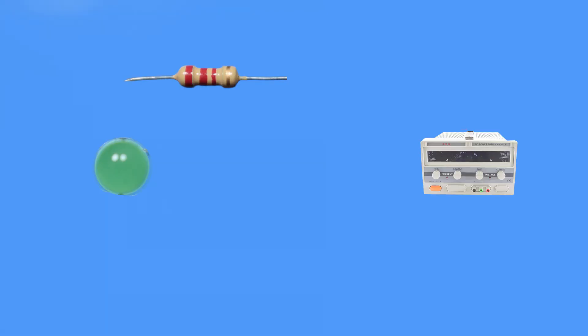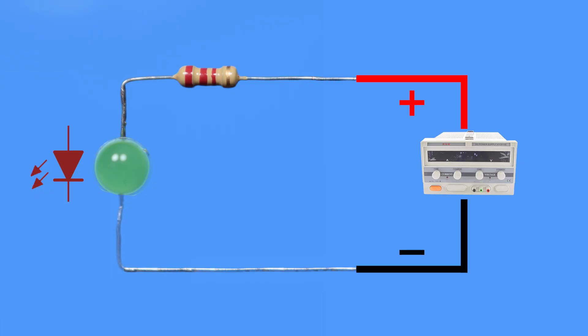Now we'll connect the circuit like this. One leg of the resistor goes to the anode, or the positive leg of the LED. The other leg of the resistor connects to the positive terminal of the power supply. And the negative terminal of the power supply goes to the cathode, or negative leg of the LED. We can see the LED lights up nicely without any damage. Now let's play with our formulas to better understand how they work.